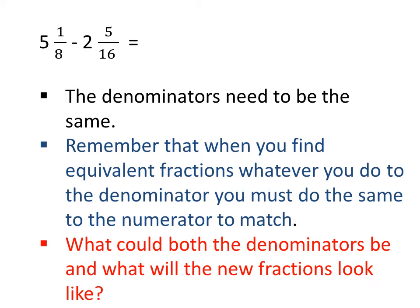The reason is that the denominators need to be the same and at the moment they are not. We have 8 and 16. We need to make them the same. Remember that when you find equivalent fractions, whatever you do to the denominator you must do the same to the numerator to match. What could both the denominators be and what will the new fractions look like?